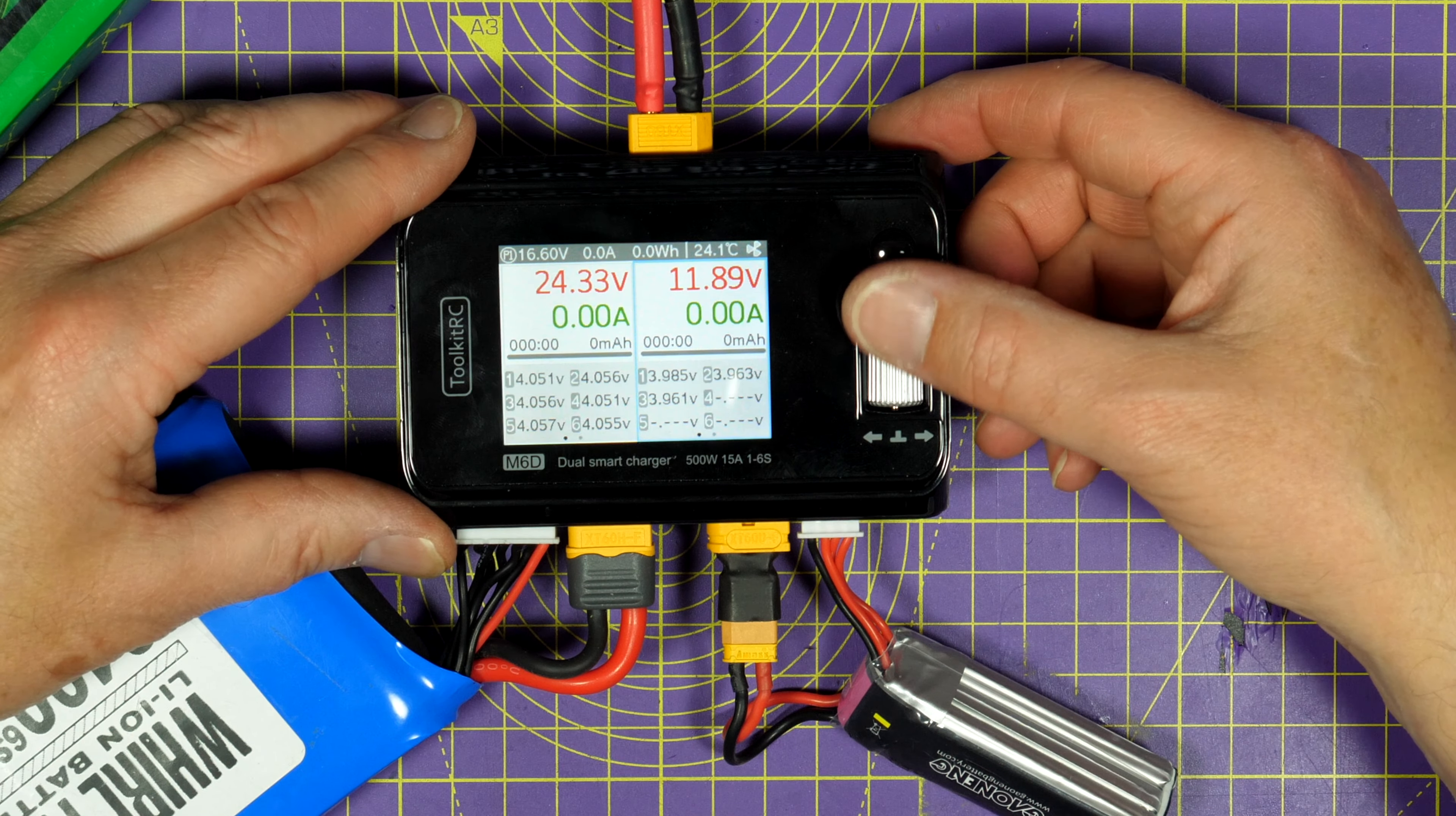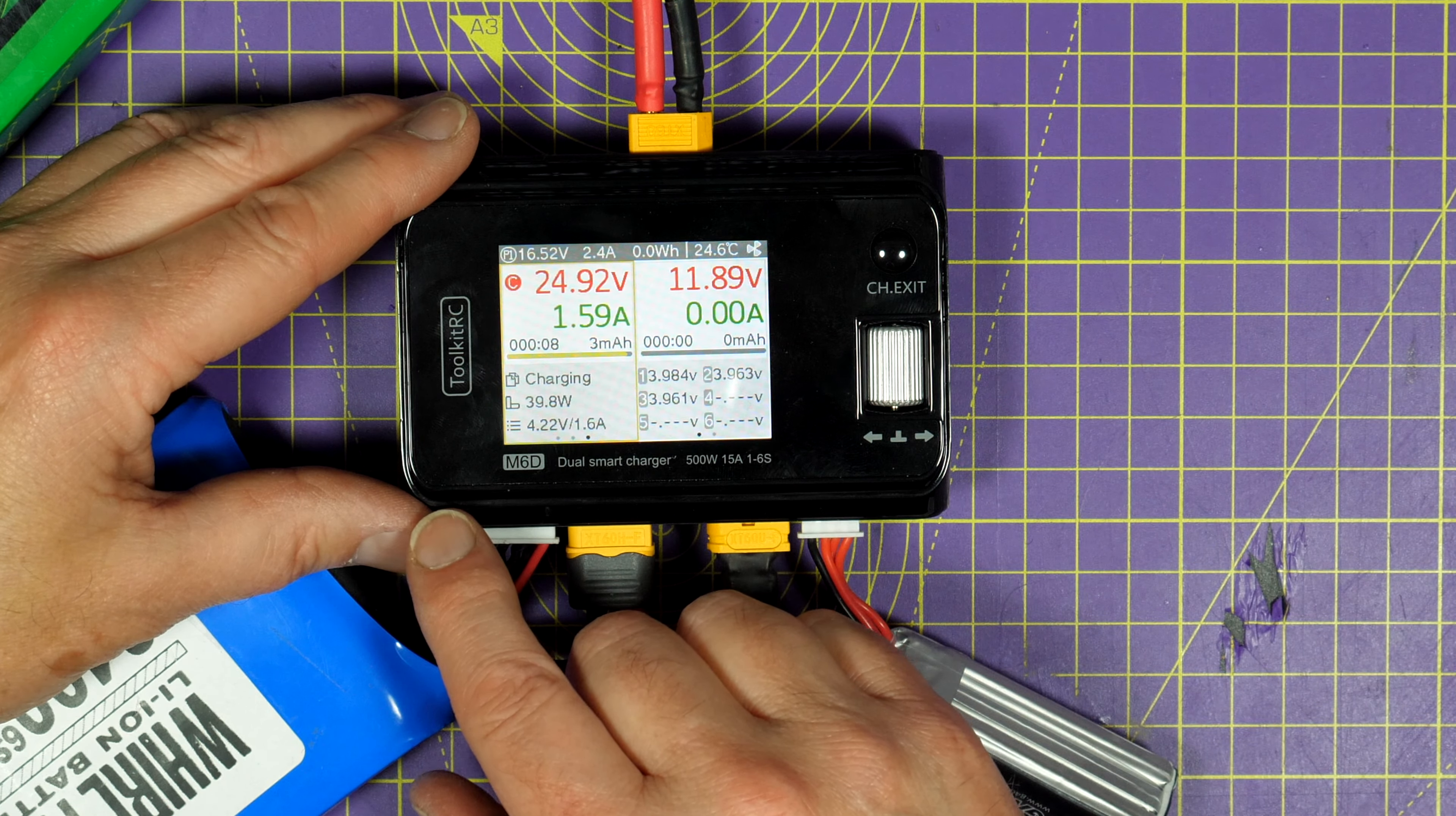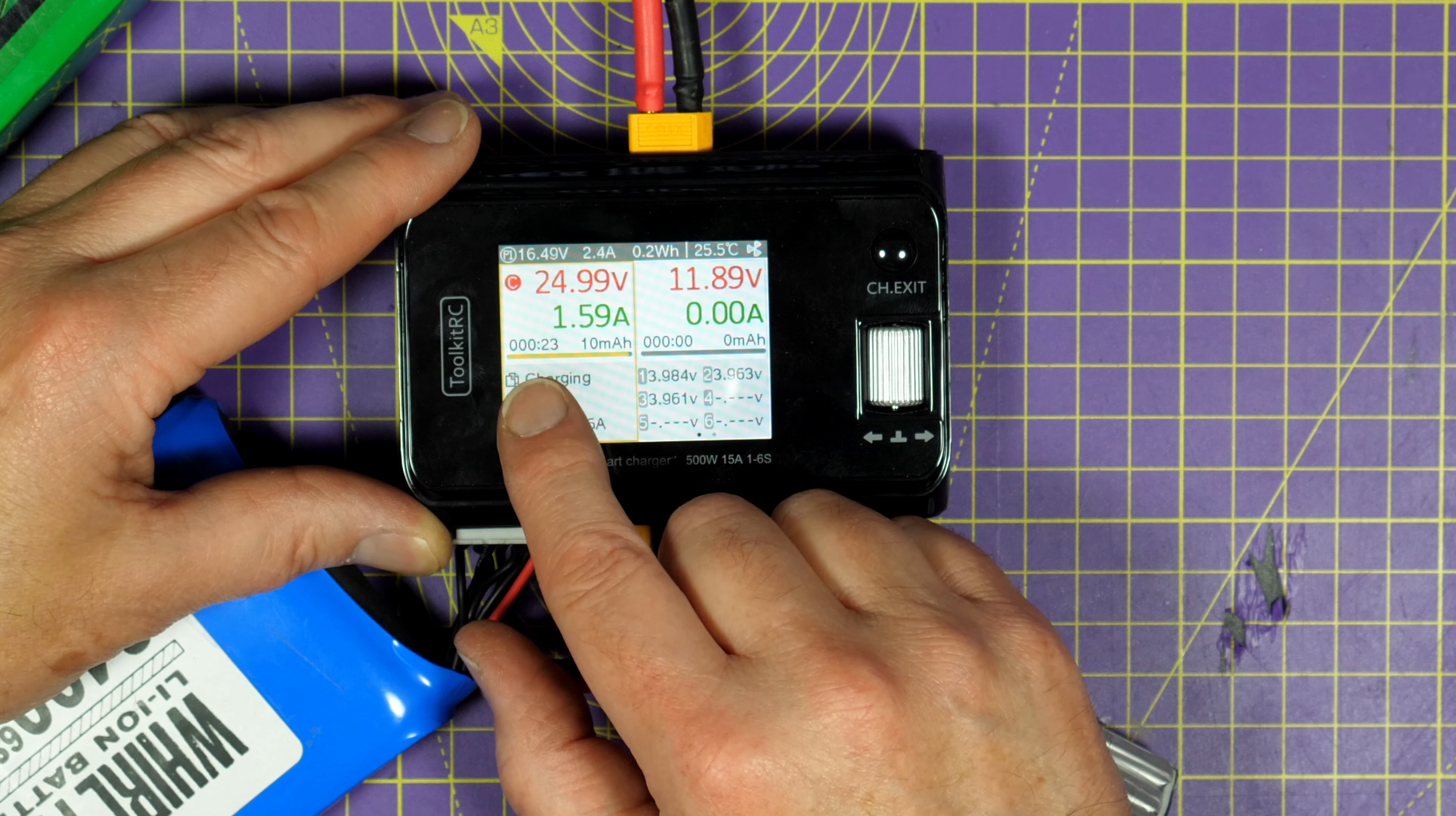So those are all the options. We are going to make sure that is charging on channel one. Hit start. There we go. So here we've got the voltage for the current pack. So we're charging, we're up to 24.9 volts, charging at 1.6 amps. It's controlling the voltage on here. It's going to have a specific profile depending on the battery and here we can see the charge time.